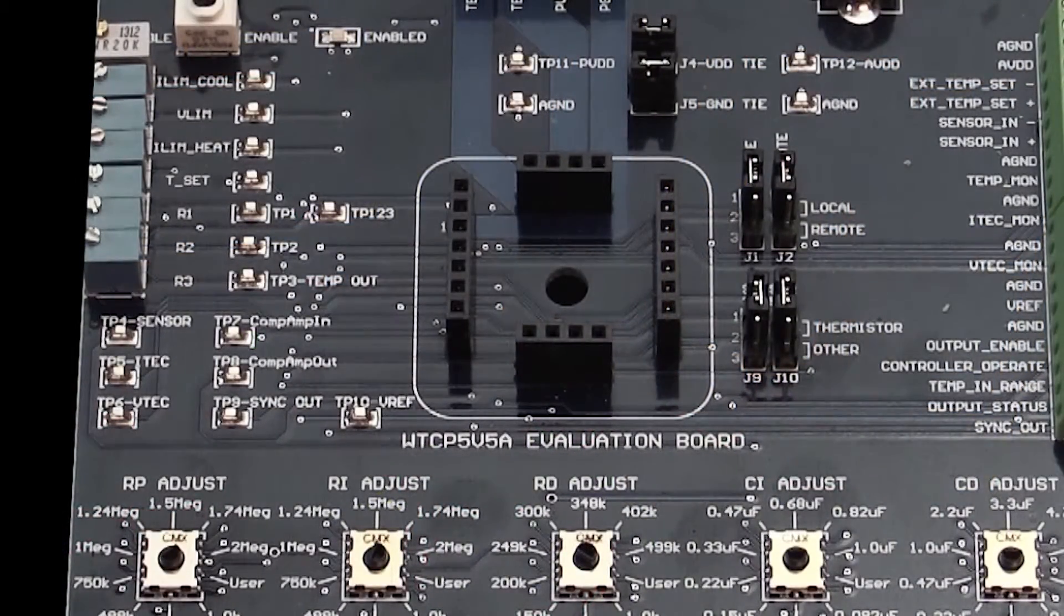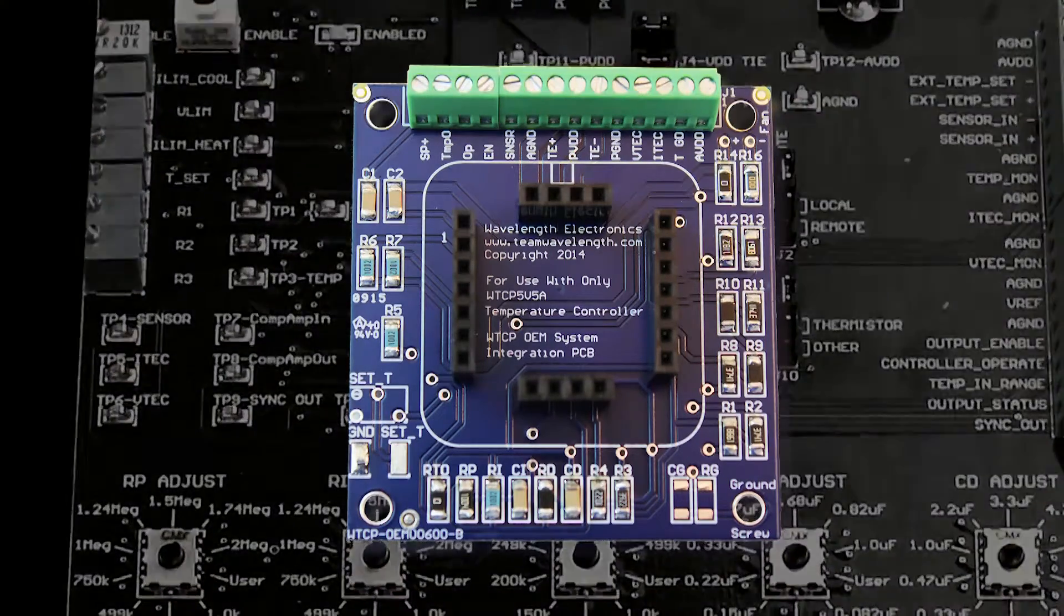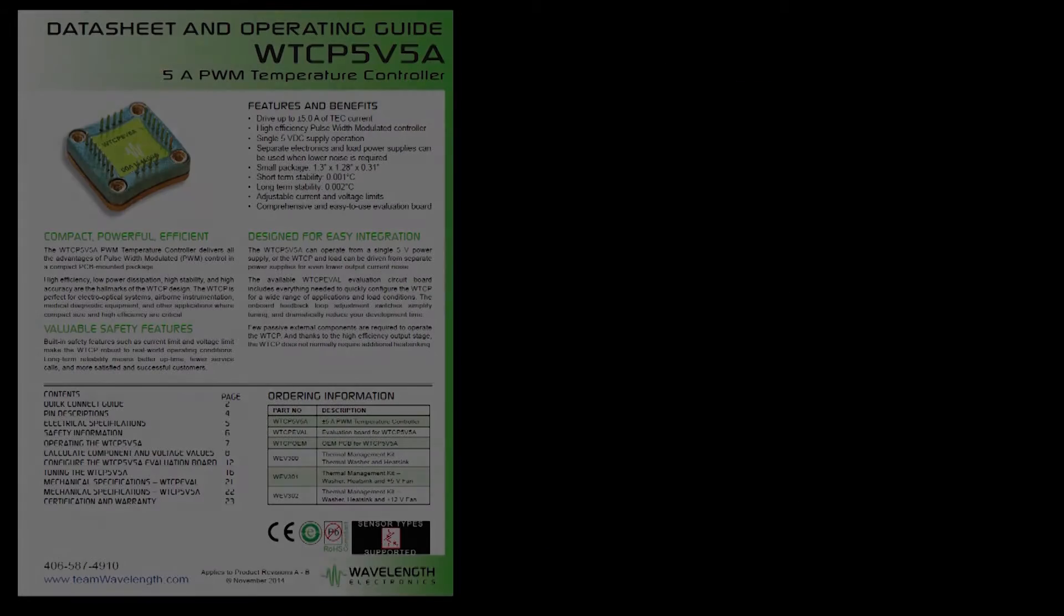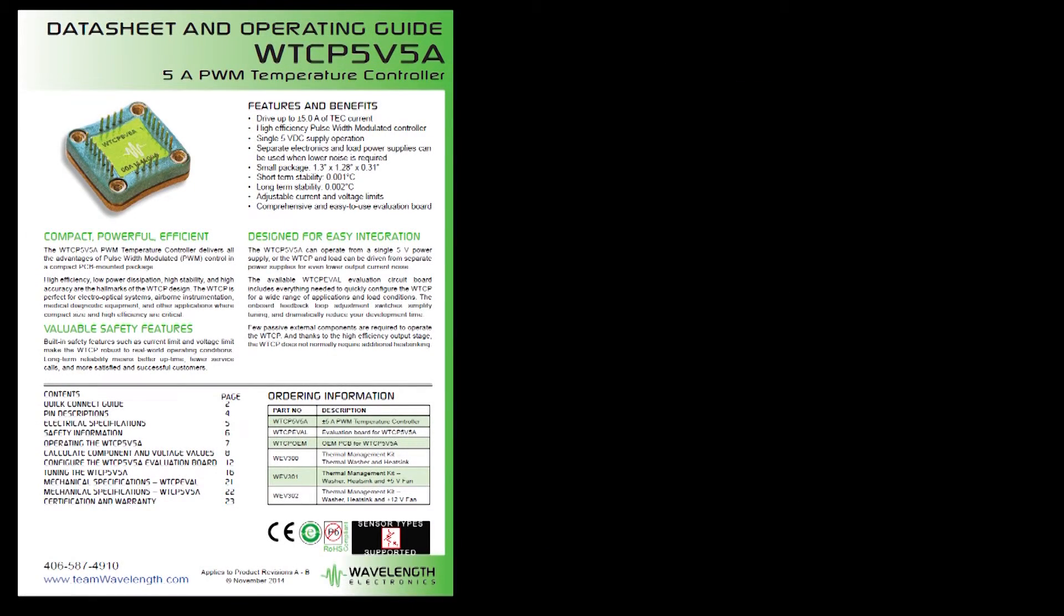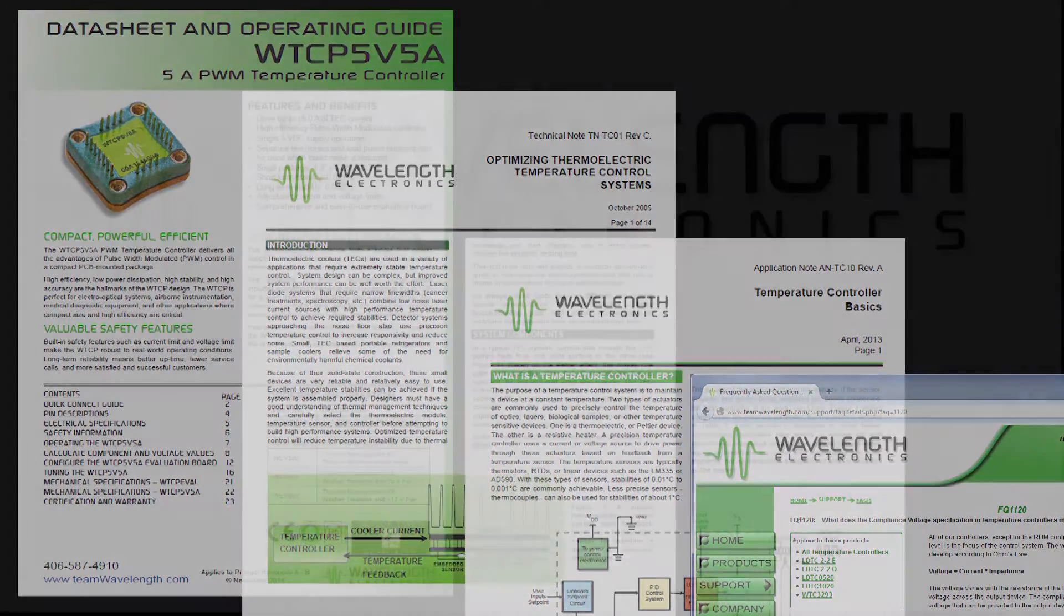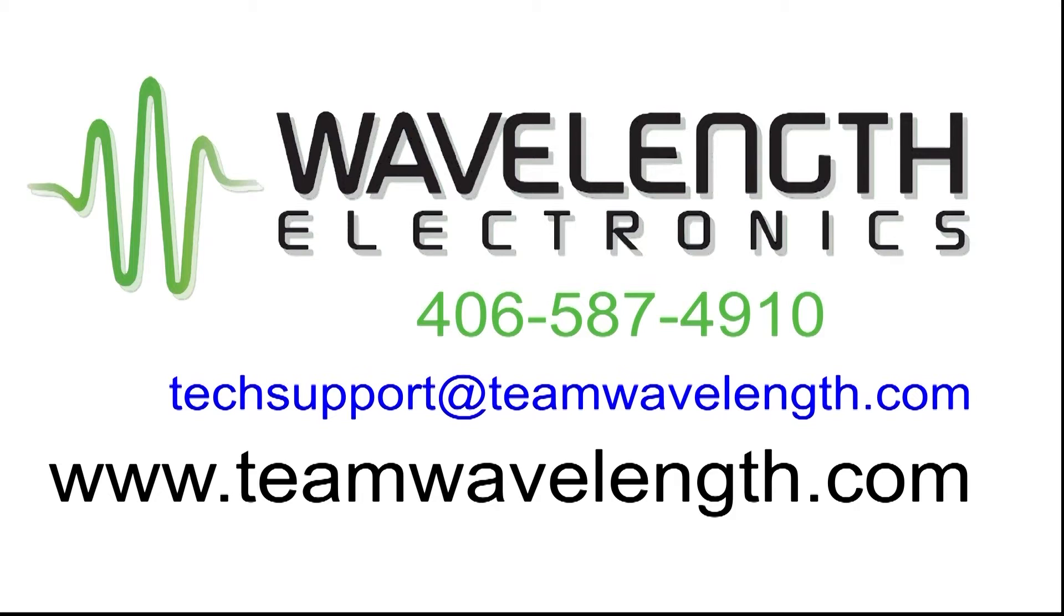Once you have tuned your system using the evaluation board, Wavelength can provide a smaller board with fixed value resistors and capacitors to duplicate your settings. Contact technical support and ask for the WTCP OEM system integration board. There is more detailed information in the WTCP PWM temperature controller datasheet. Our website also has tech notes, app notes and FAQs. Our goal is to help you succeed. If you have any questions, contact our technical support engineers. Consider us an extension of your team.